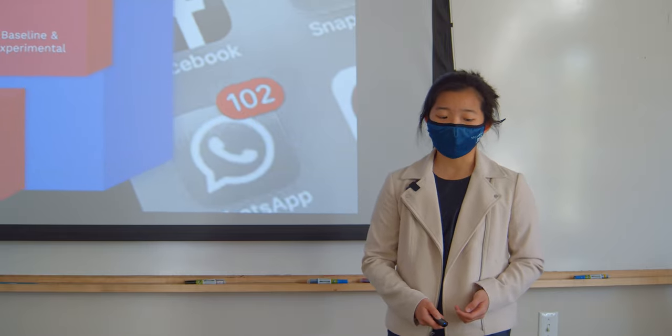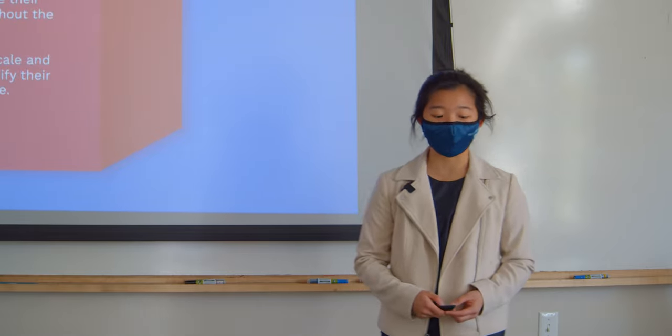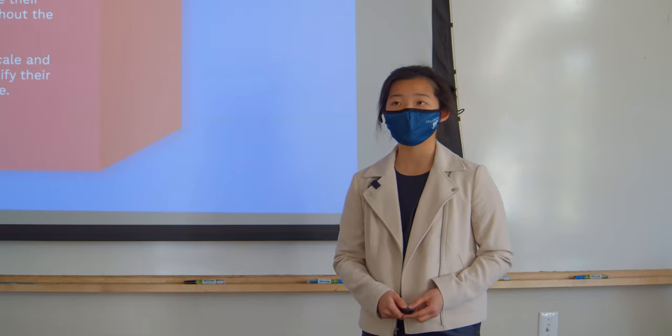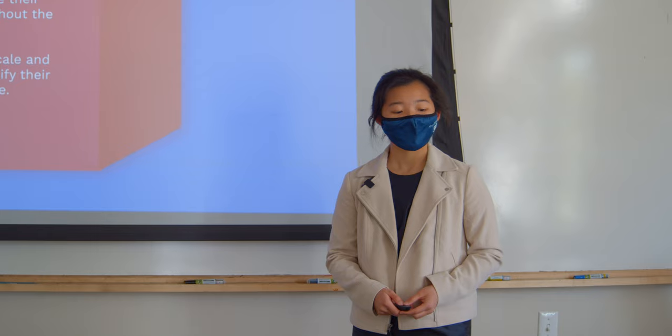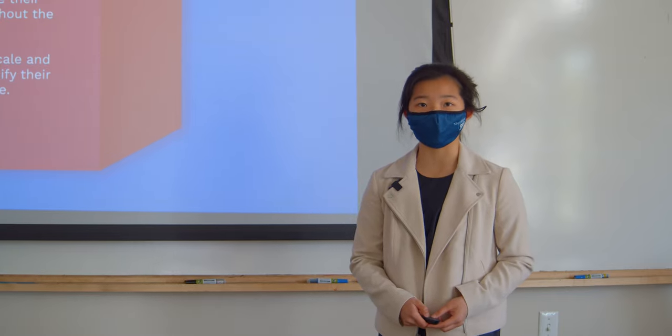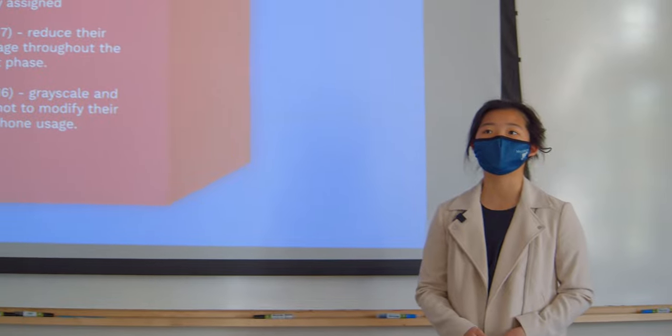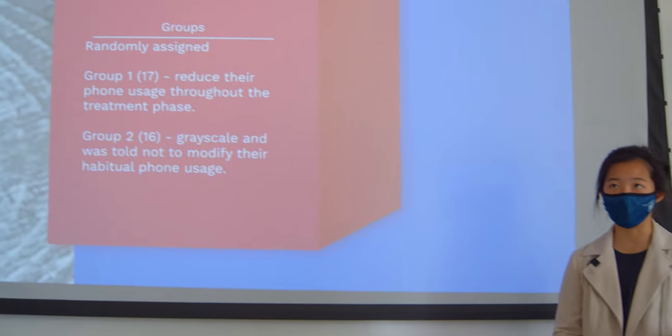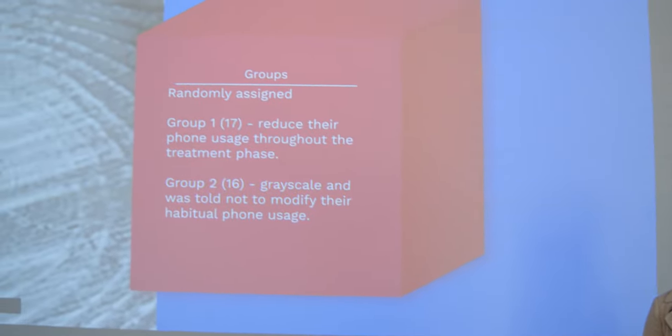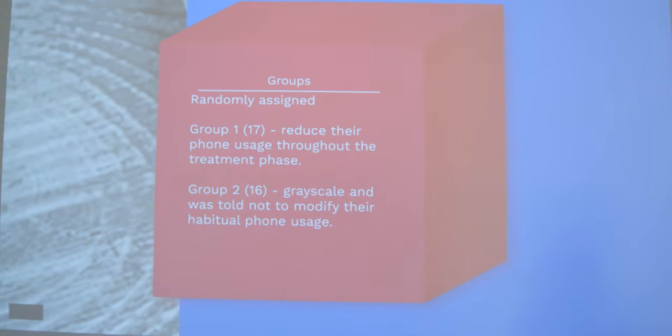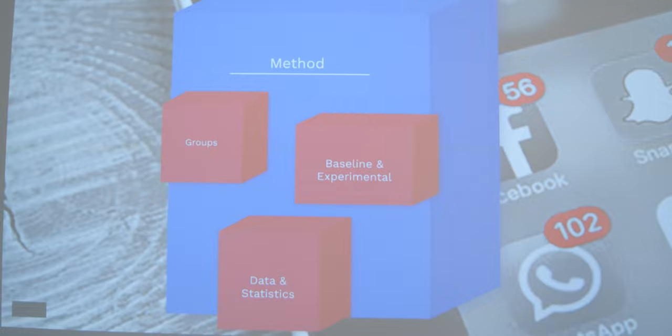33 participants were split into two groups and randomly assigned to avoid any selection bias. The first group was told to reduce their phone usage through self-control. The second group was told not to modify their habits in terms of phone usage, but instead their phone would be turned into grayscale. They used their phones normally.